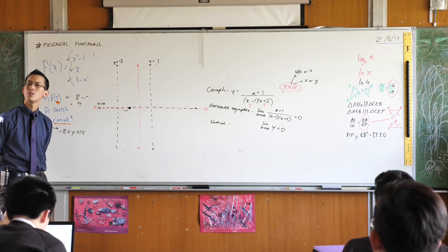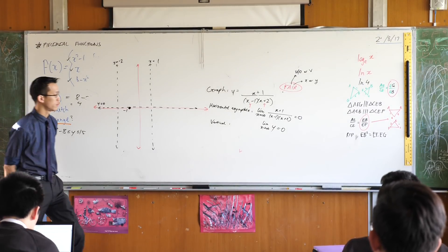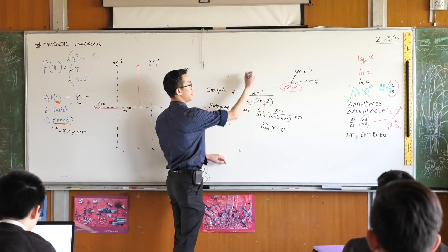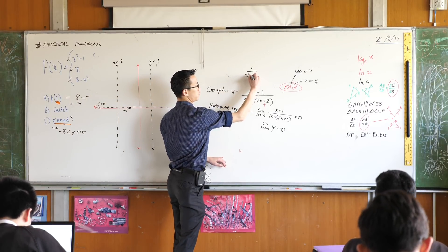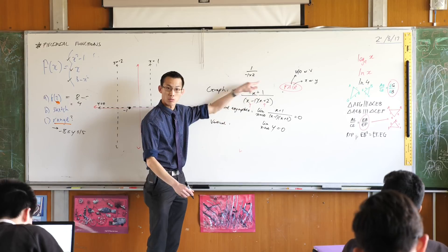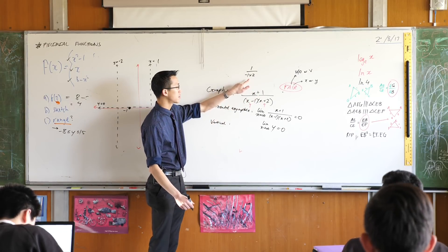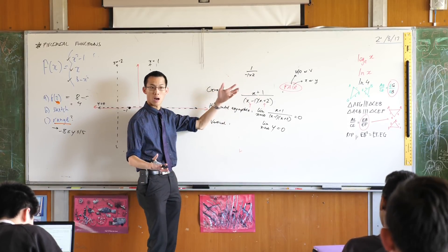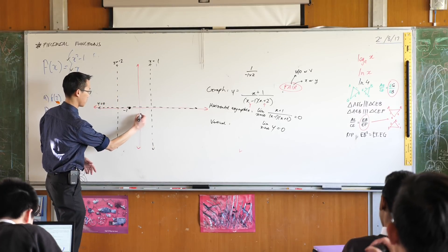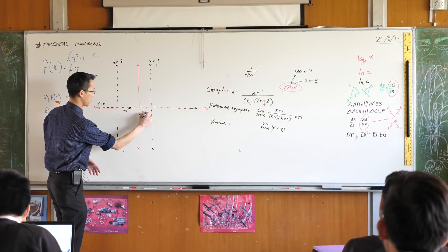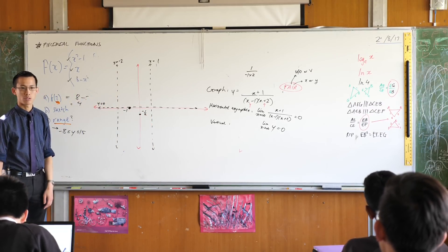What about Y intercepts? How do I find those? Let X equals zero. So it looks to me like that's going to be one over negative one times two. Did you see how I got that? Put zero into all those spots. That's negative a half. How's that look? Looking all right.